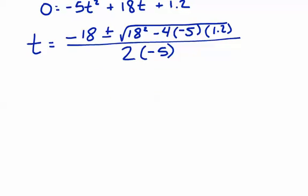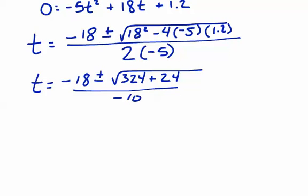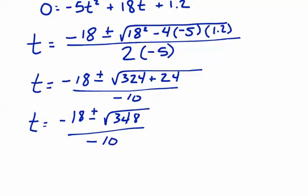So let's simplify this a little bit. 18 squared is 324. 4 times negative 5 is negative 20 times 1.2 is negative 24. So minus a negative 24 makes that plus 24. And then divided by 2 times negative 5, that becomes divided by negative 10. So simplifying this, we have negative 18 plus or minus the square root of 348, all divided by negative 10.